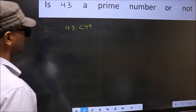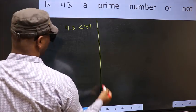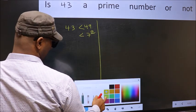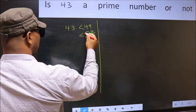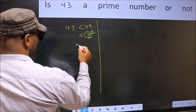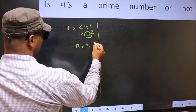Next, 49 is nothing but 7 squared. Now you write all the prime numbers less than this number. They are 2, 3, and 5.